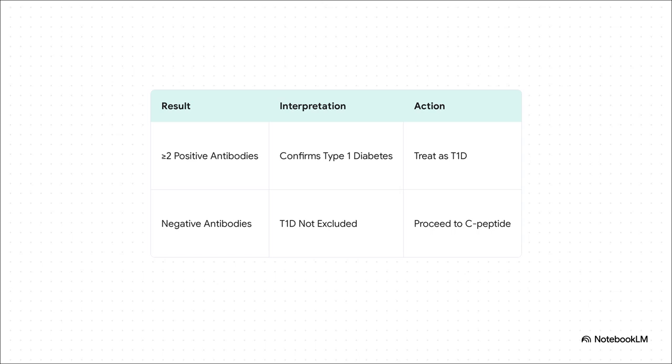Interpreting these results is pretty straightforward for the most part. If you have two or more positive autoantibodies, that confirms a diagnosis of type 1 diabetes. But — and this is a big but — a negative result does not rule it out. In fact, about 5 to 10% of adults with new-onset type 1 are antibody negative. So a negative test just tells you one thing: you've got to dig deeper.